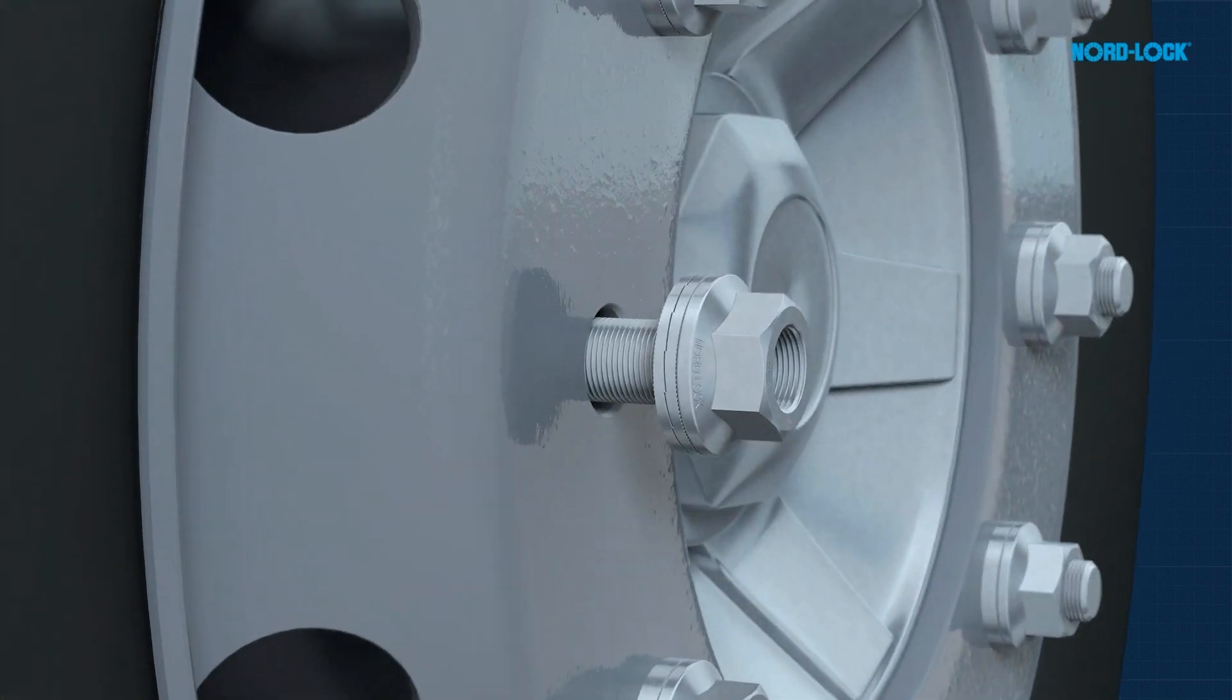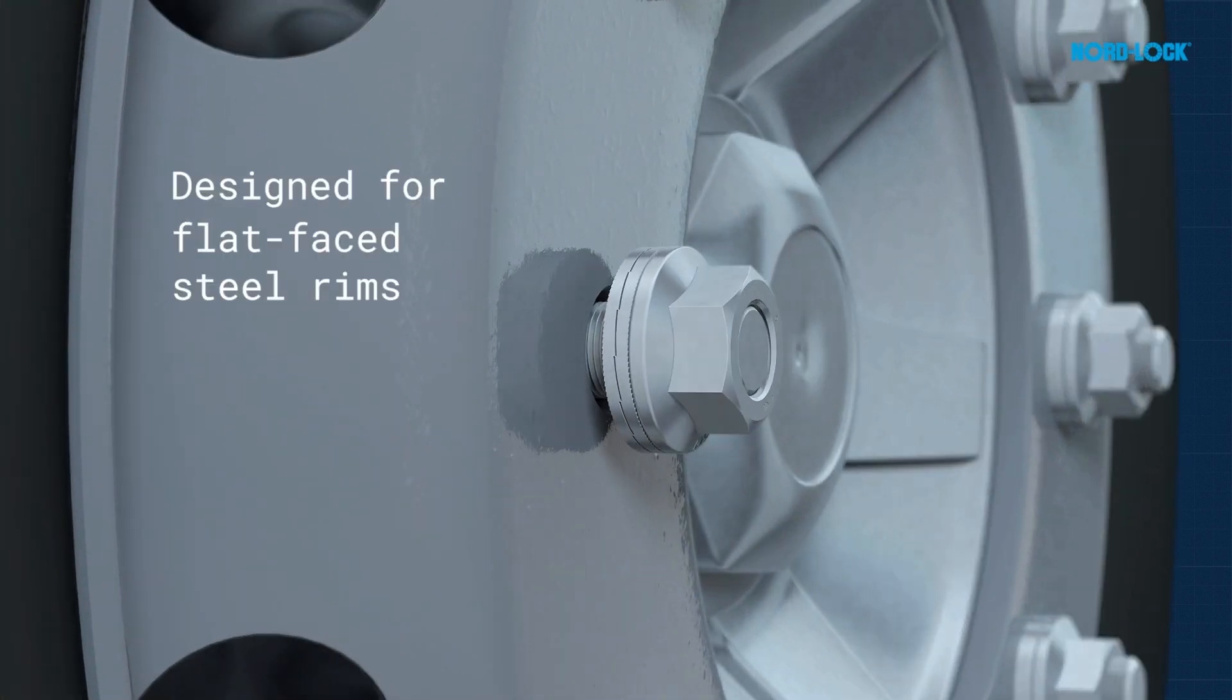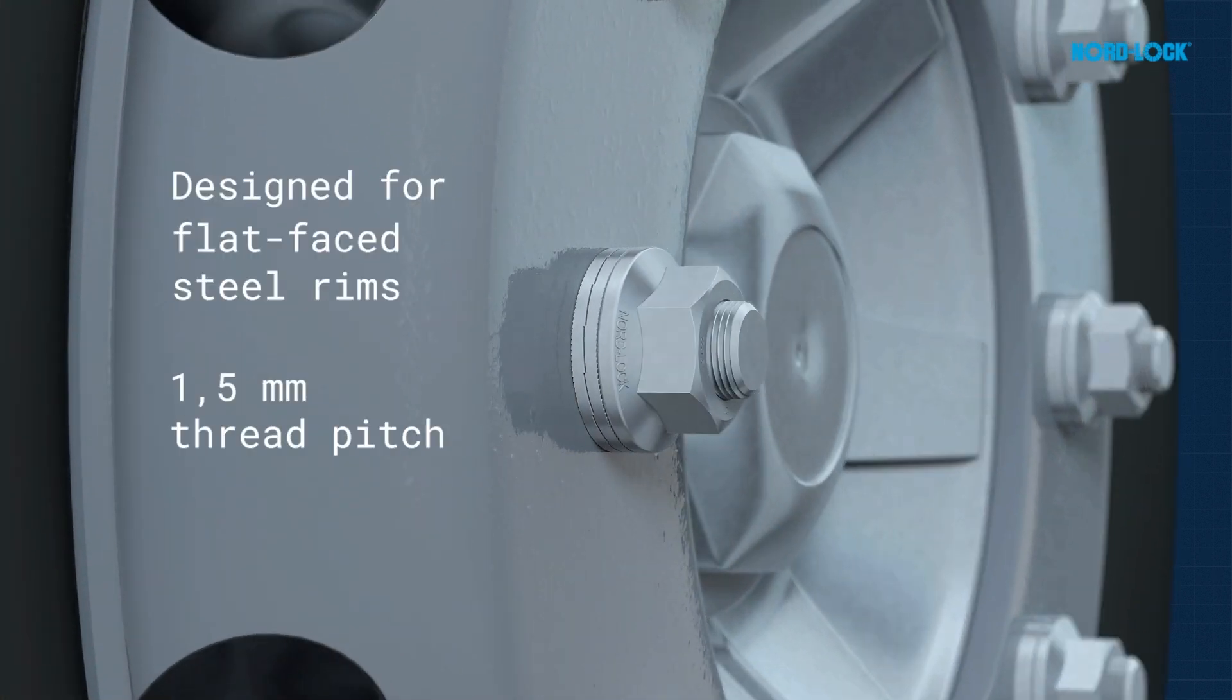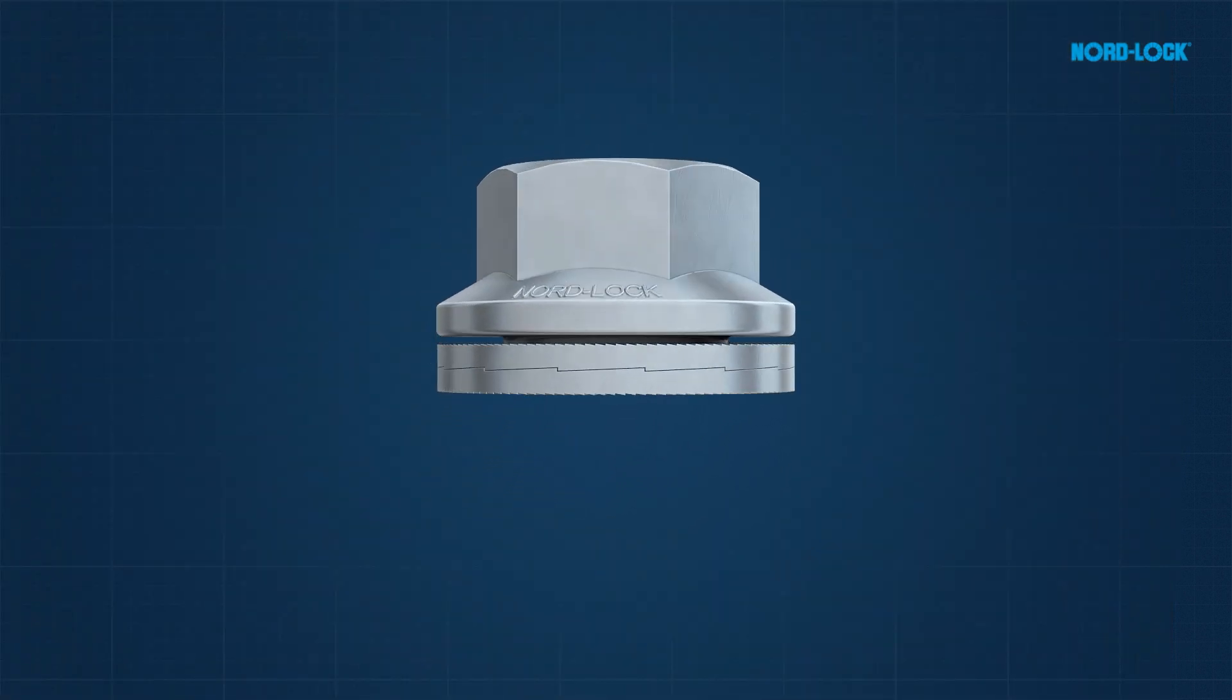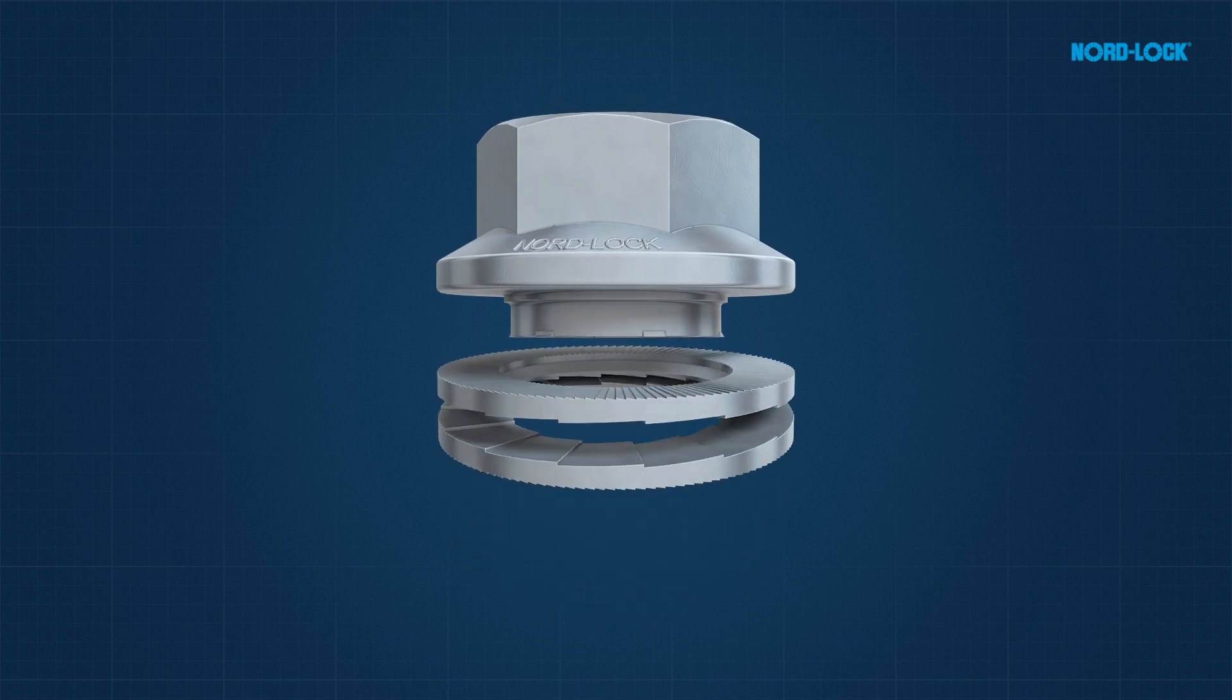The NordLok wheel nut safely secures wheels on both on-road and off-road heavy vehicles. It consists of a nut and the NordLok wedge-locking washers that come pre-assembled.